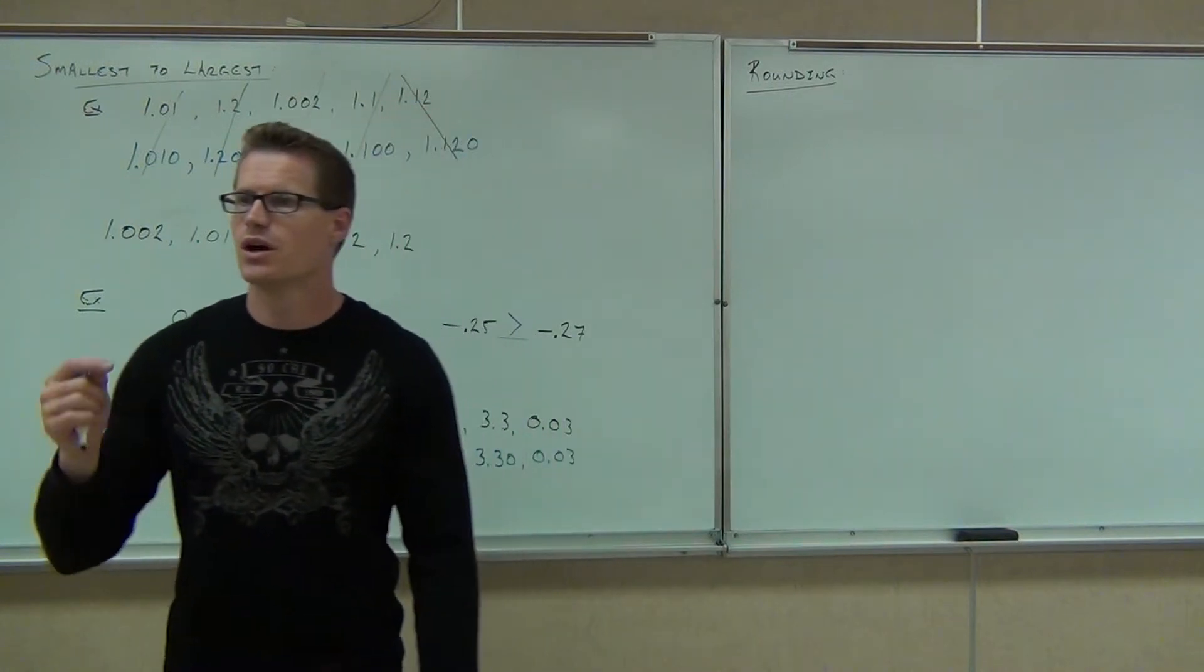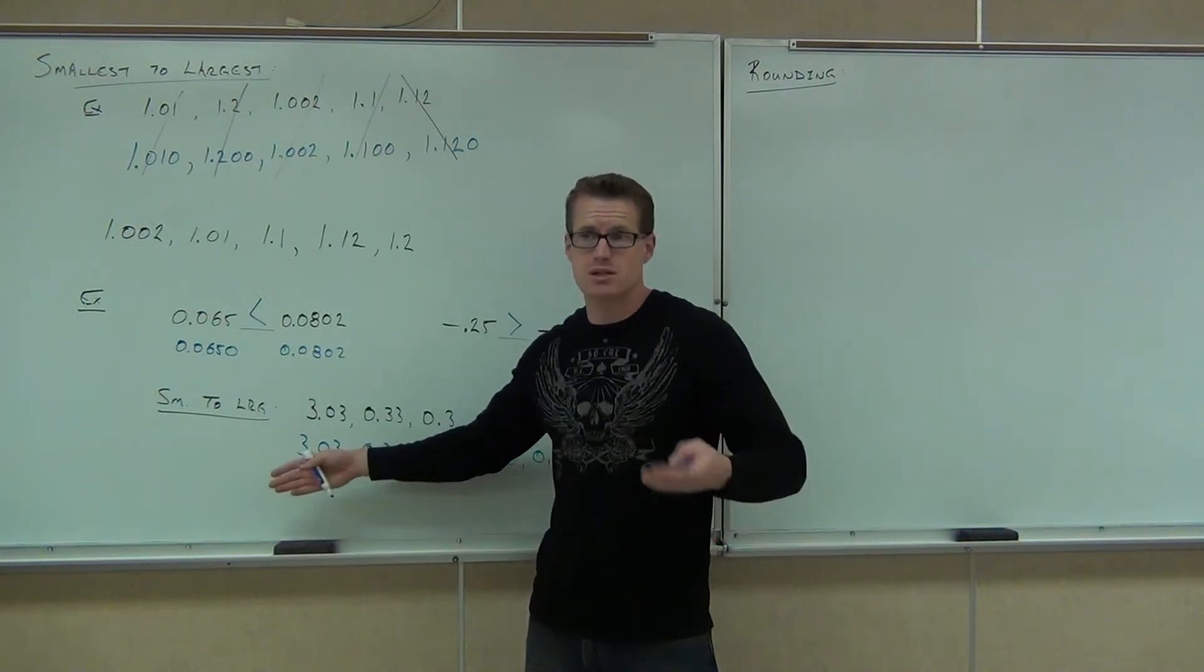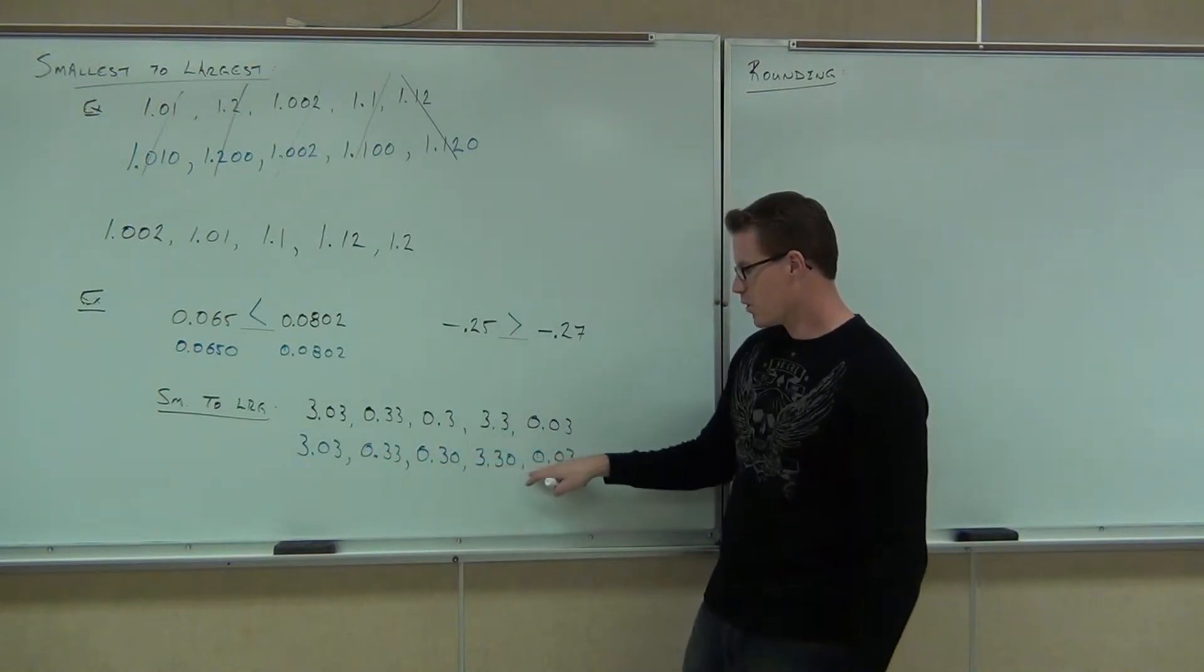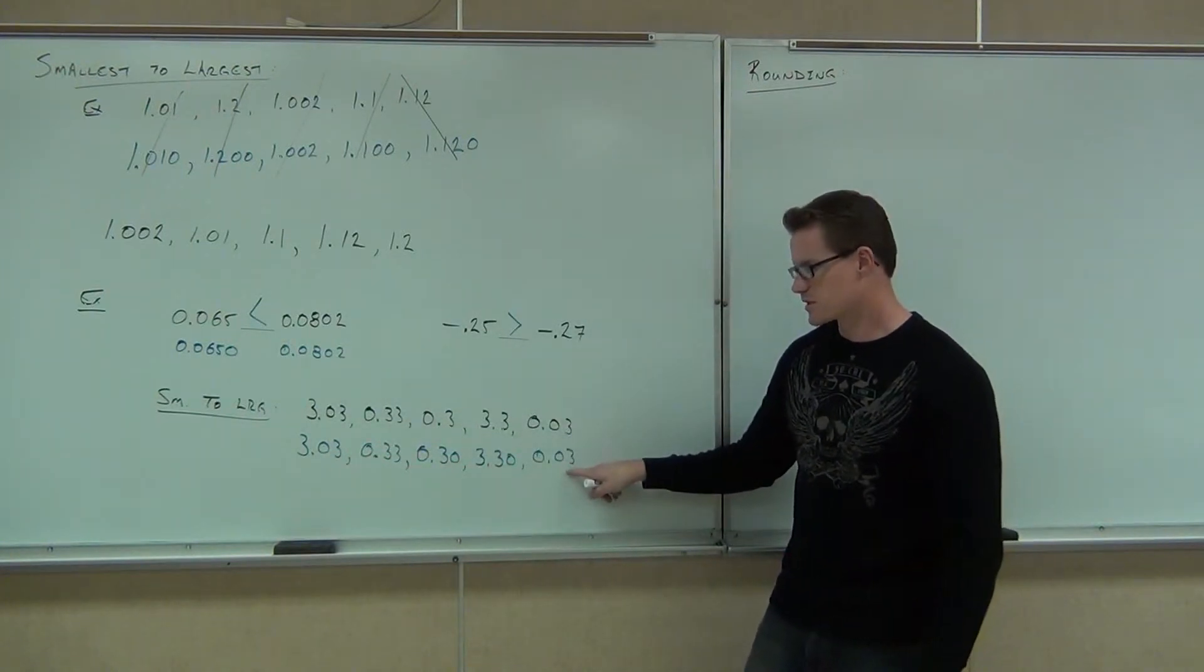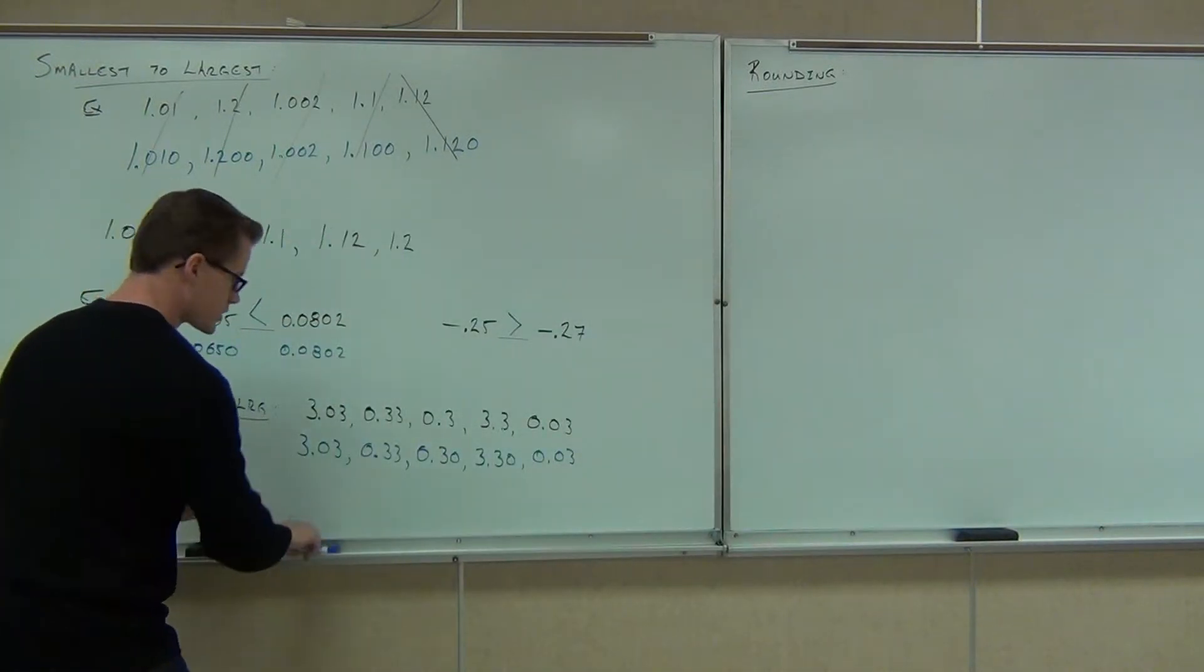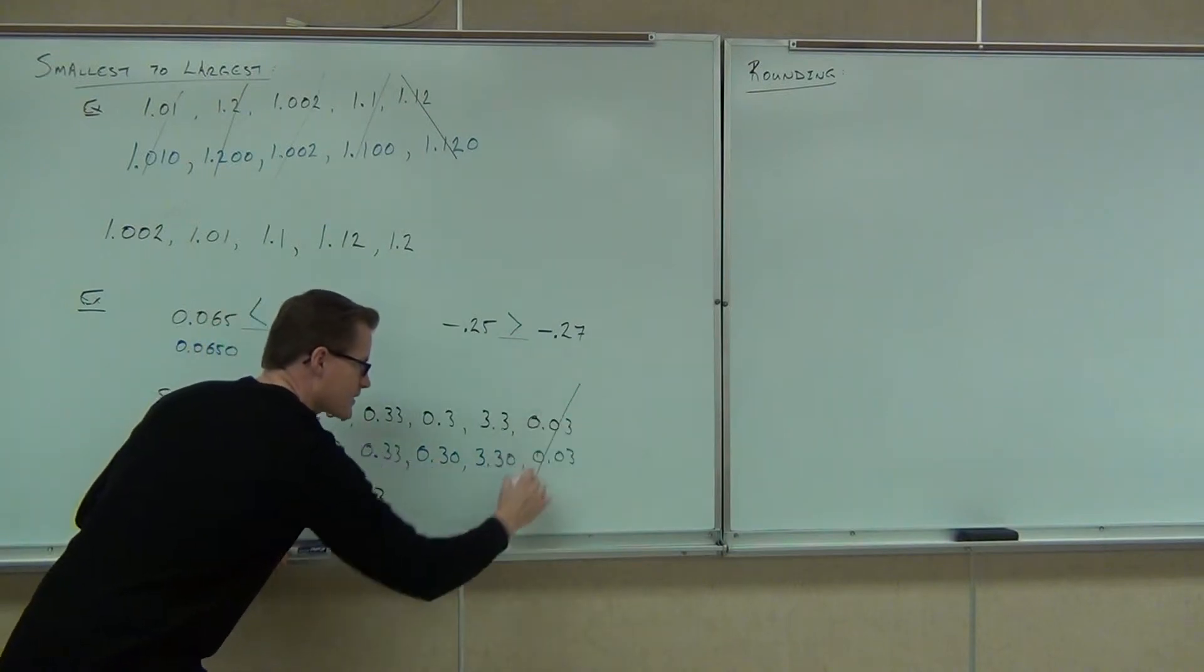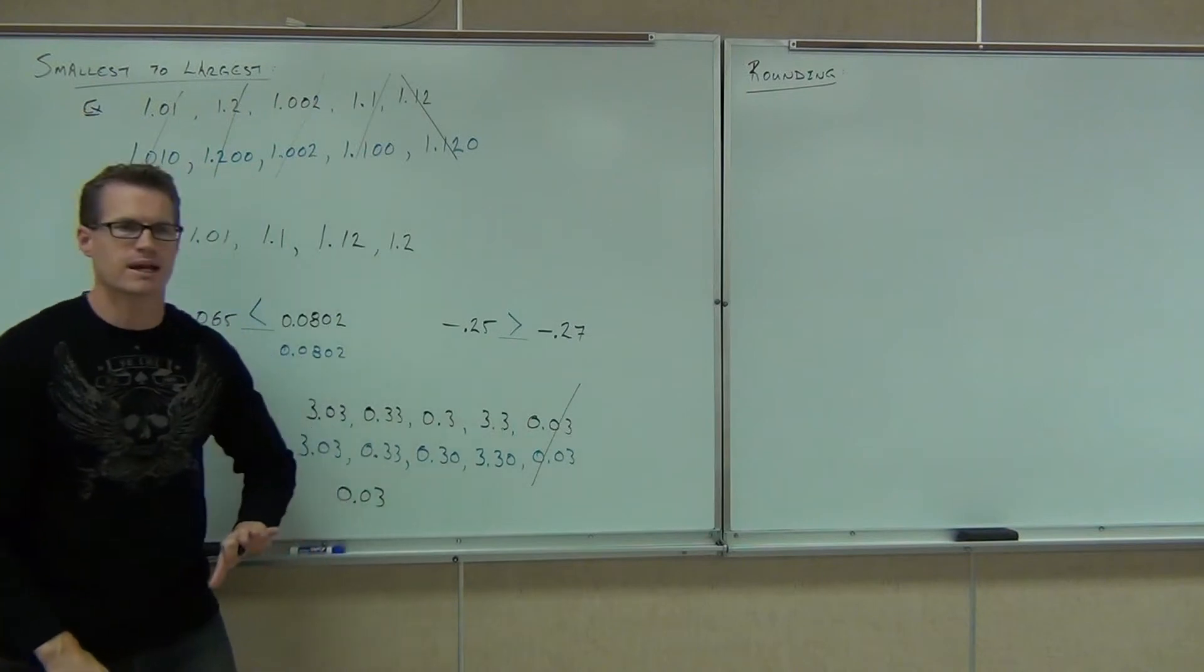We're going to go smallest to largest. What's the smallest number up here? If you ignore the decimal place, it's going to tell you. This would be like 303, this would be like 33, this would be like 30, 330 or 3. Which one's the smallest? 0.03. This is the smallest one. So writing smallest to largest, I'm going to translate that back into the number we originally had. 0.03. I cross it out because I don't want to get confused. I'm done with that one.